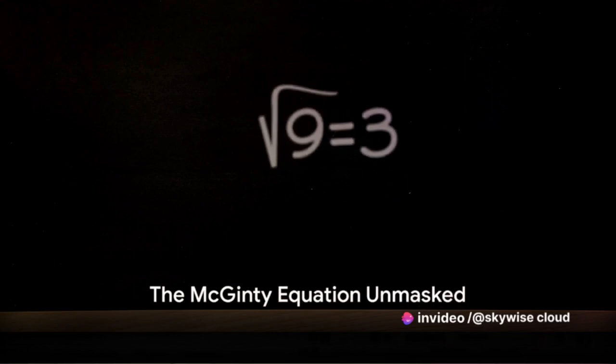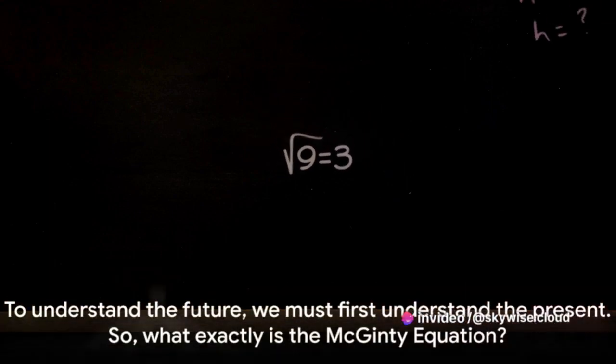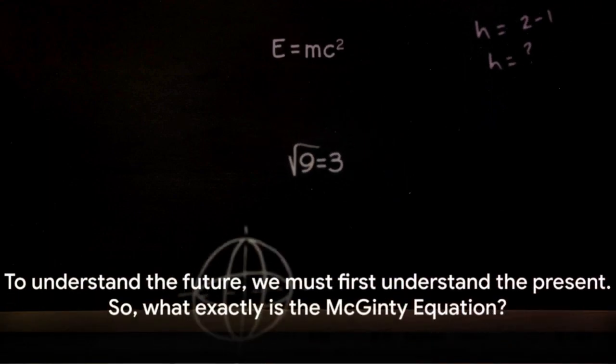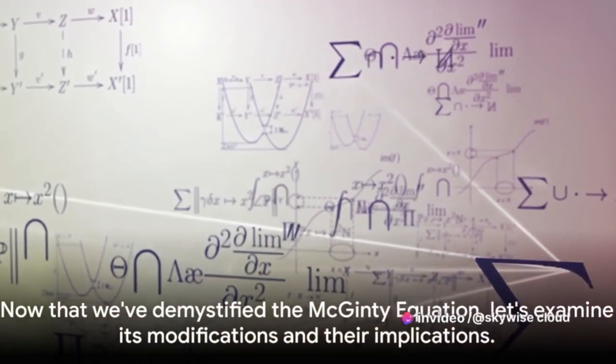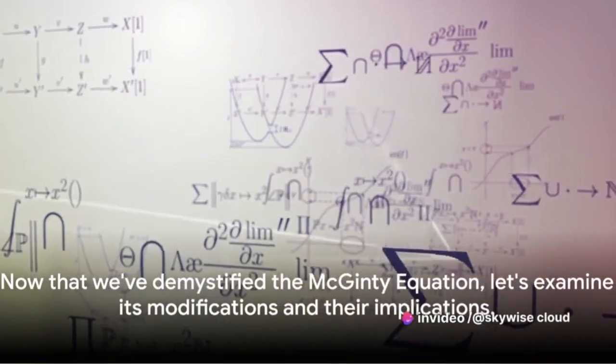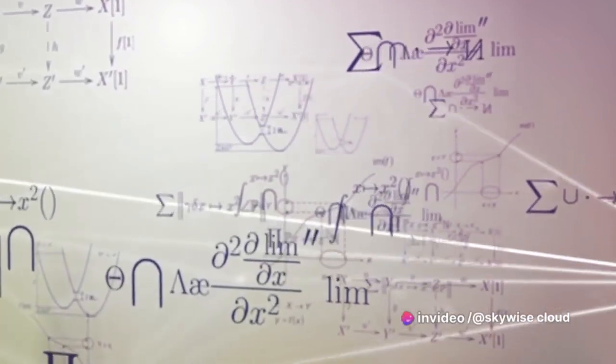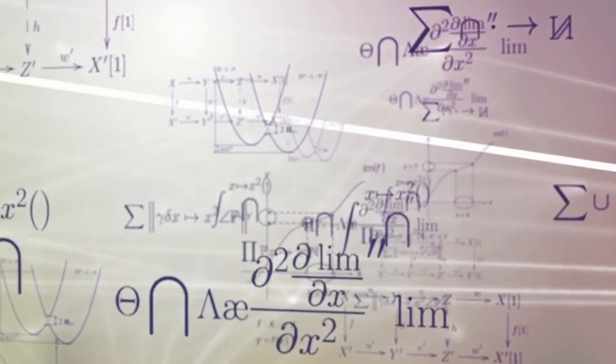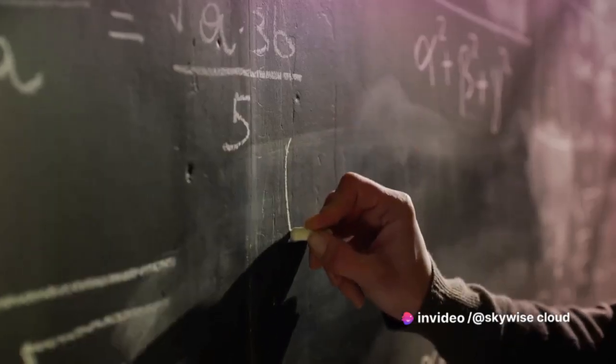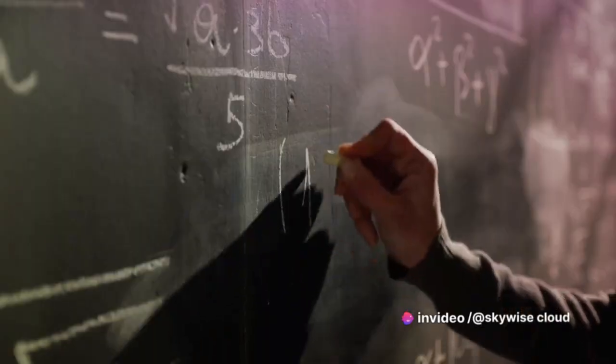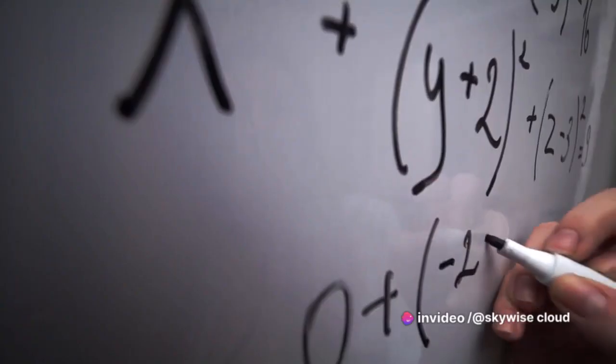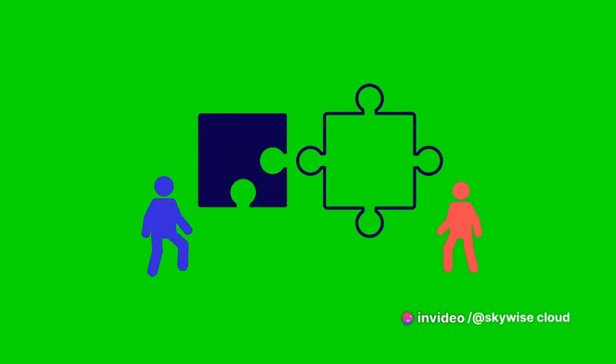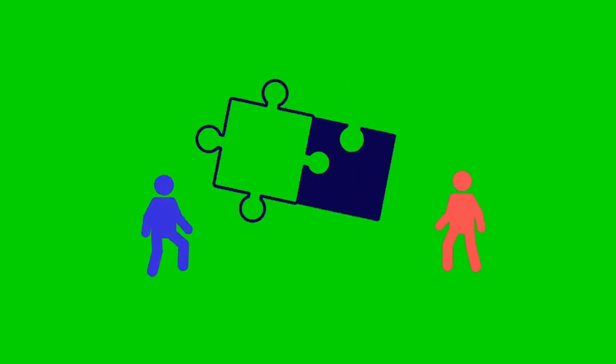To understand the future, we must first understand the present. So, what exactly is the McGinty equation? This equation is a key player in the fascinating world of quantum mechanics where the bizarre and unexpected are the norm. But don't worry, we'll break it down and make it as clear as a summer's day. The McGinty equation, or MEQ, in its simplest form is ψ(x,t) = ψ_QFT(x,t) + ψ_fractal(x,t,d,m,q,s).